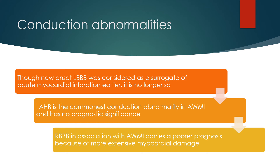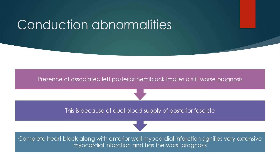Though new onset left bundle branch block was considered a surrogate of acute myocardial infarction earlier, it is no longer so. Left anterior hemiblock is the commonest conduction abnormality in anterior wall myocardial infarction and has no prognostic significance. Right bundle branch block in association with anterior wall myocardial infarction carries a poorer prognosis because of more extensive myocardial damage. Presence of associated left posterior hemiblock implies a still worse prognosis, because of dual blood supply of the posterior fascicle.